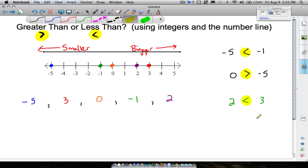How about negative one and zero? Zero is farther to the right than negative one is. So zero is bigger than negative one, but we want to open the alligator up the right way. So we read this as negative one is less than zero.